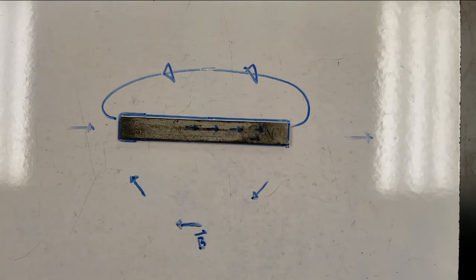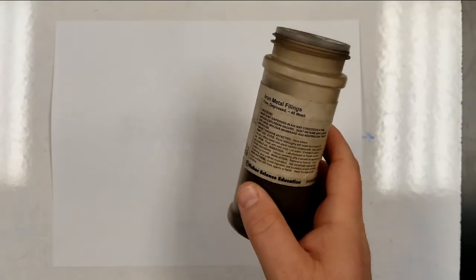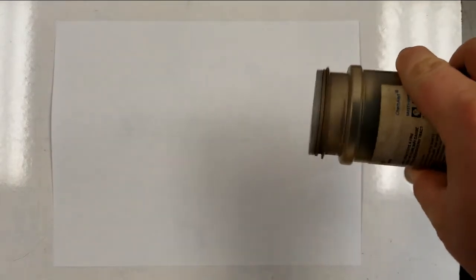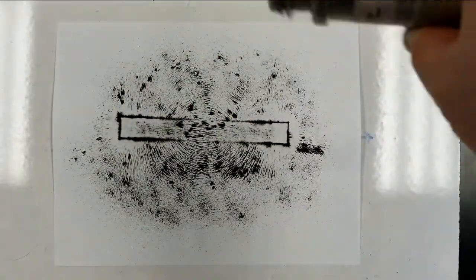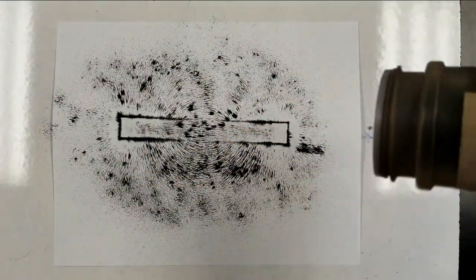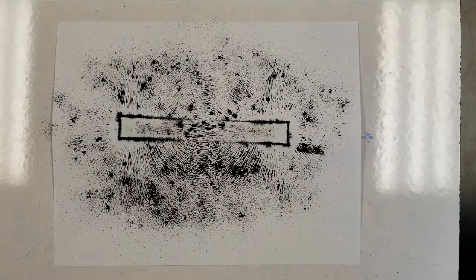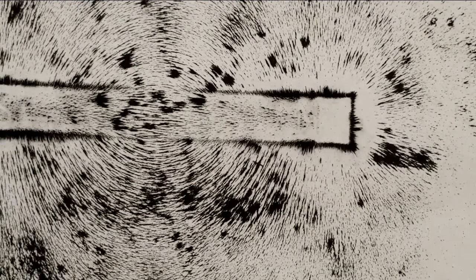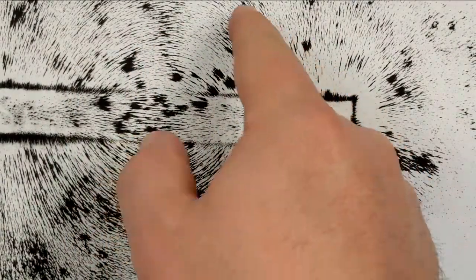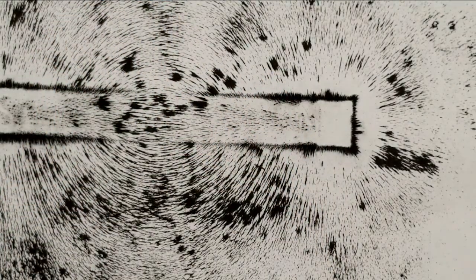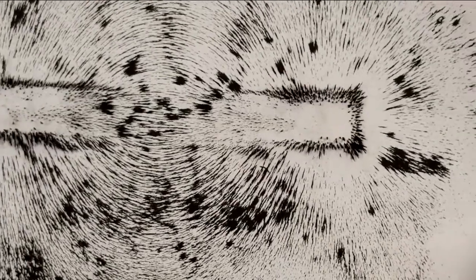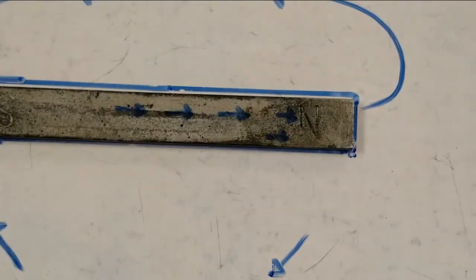One way to get a better picture of what the actual magnetic field looks like, rather than moving a compass around, is to cover the magnet with a piece of paper and then sprinkle some iron filings on top. The iron filings will line up with the magnetic field and give us a good picture of what it looks like. When we look at the pattern the iron filings create, you'll notice these really nice loops. You can't tell which direction they're going, but you can tell they are closed loops. The piece of paper keeps the iron filings from getting stuck to your magnet.